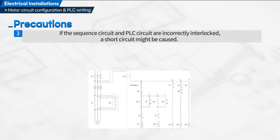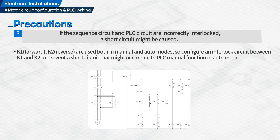Third, if the sequence circuit and PLC circuit are incorrectly interlocked, a short circuit might be caused. K1 forward and K2 reverse are used both in manual and auto modes, so configure an interlock circuit between K1 and K2 to prevent a short circuit that might occur due to PLC manual function in auto mode.